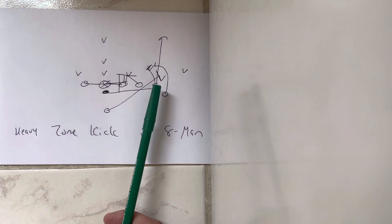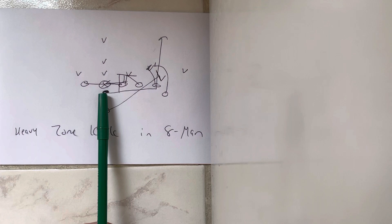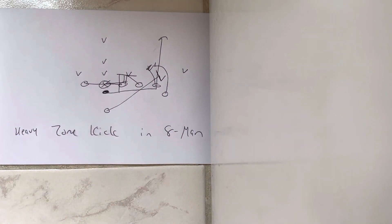The B back's going to kick out the first threat off the end's block. He's going to put his helmet to the left, right for him, through him, and drive him out of bounds. Quarterback's going to take the snap. He's going to run tight off the end's block, turn up, and score. And that's how you run a heavy zone kick in eight-man football.